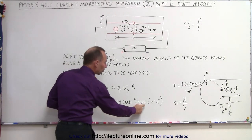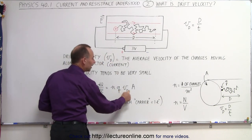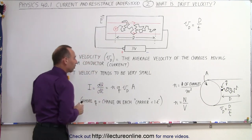So, the charge in each charge carrier, which is equal to a singular charge of an electron, times the drift velocity, times the cross-sectional area.